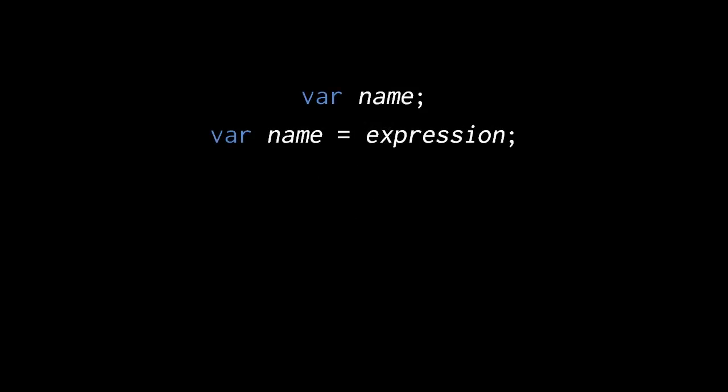In Pigeon, we implicitly created variables by assigning to a previously unused name, but in JavaScript we have to explicitly declare the existence of our variables using a var statement. The var statement begins with the reserved word var, followed by the name of the variable, and then optionally an assignment to give that variable an initial value.